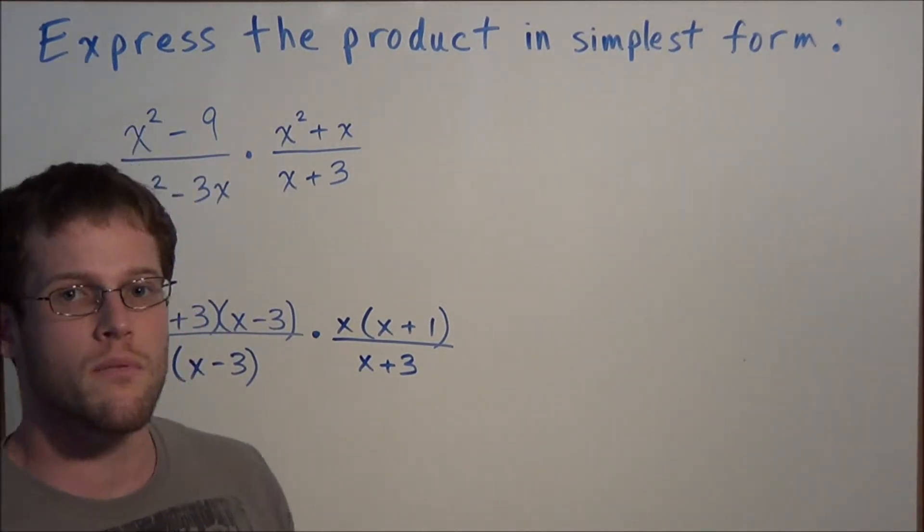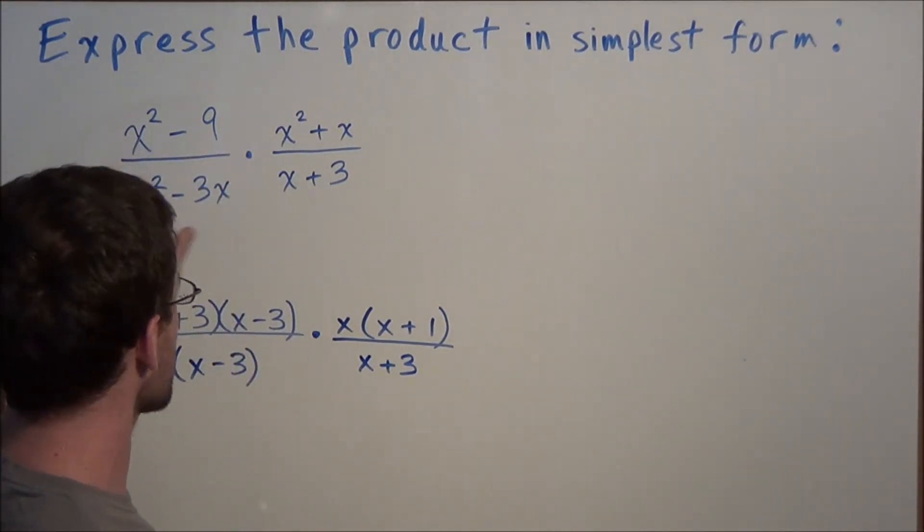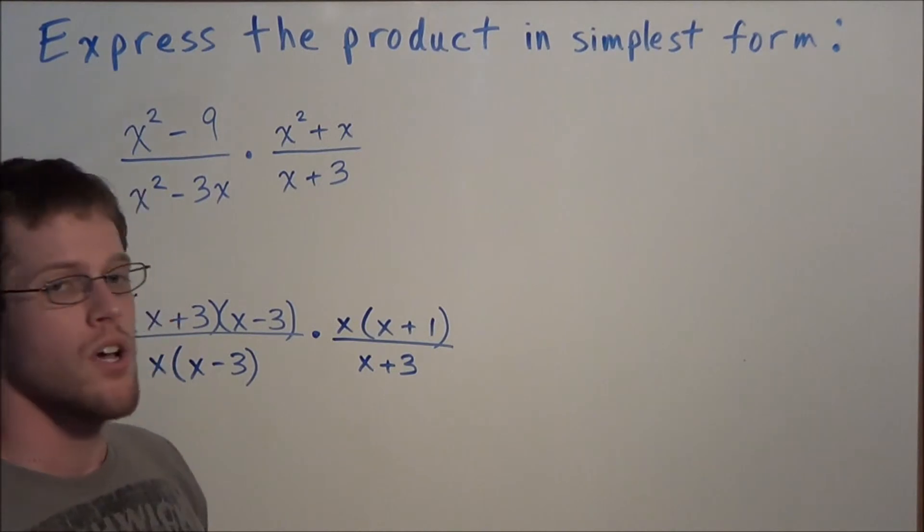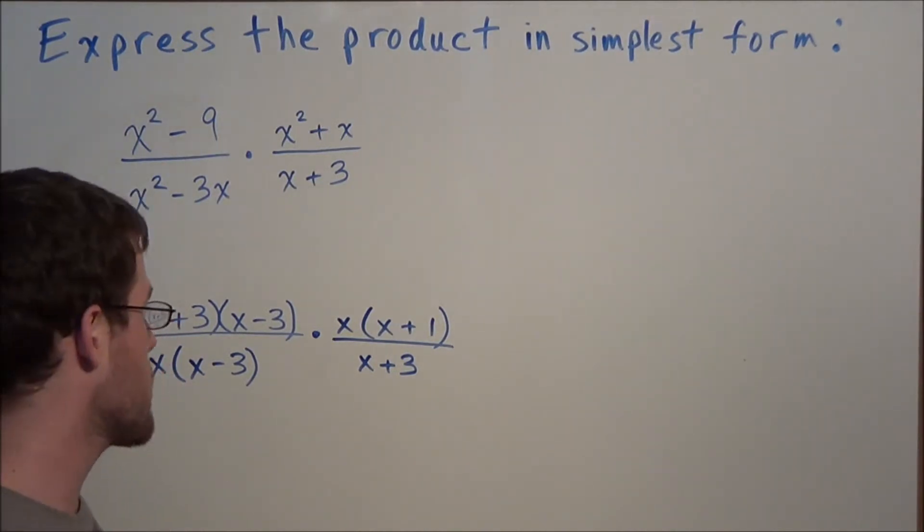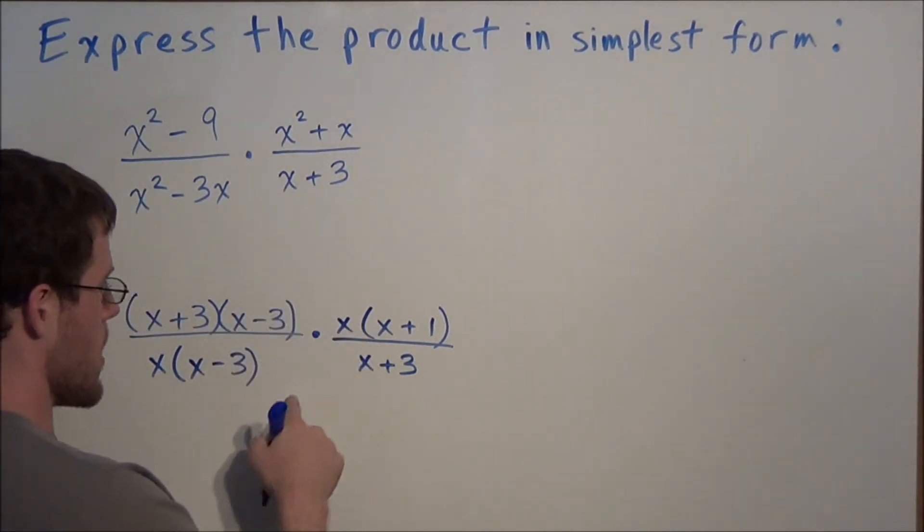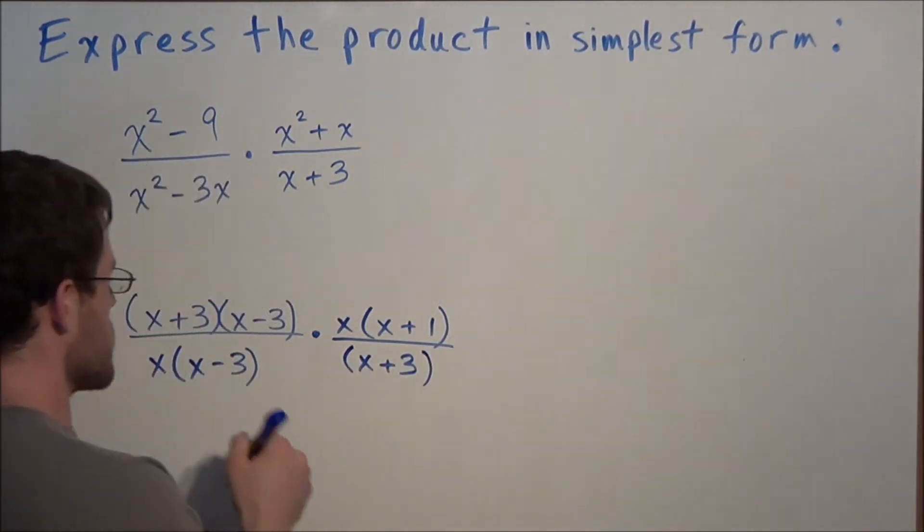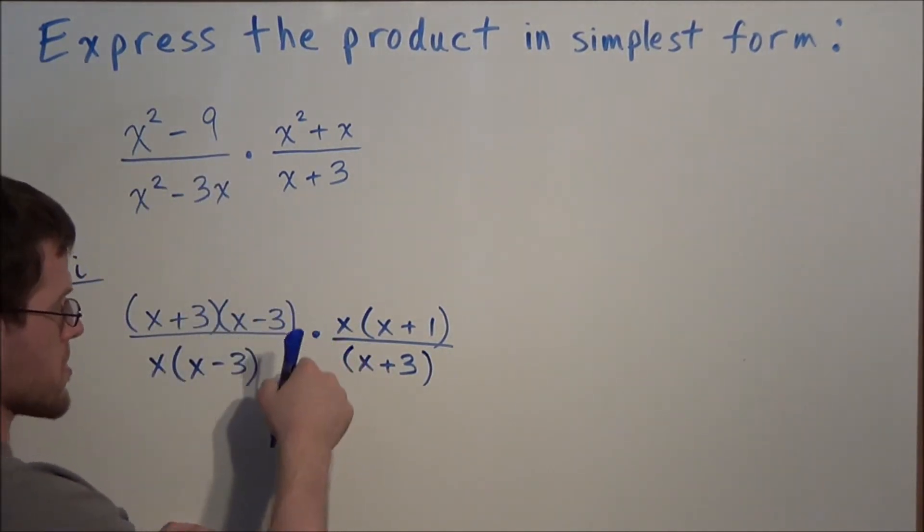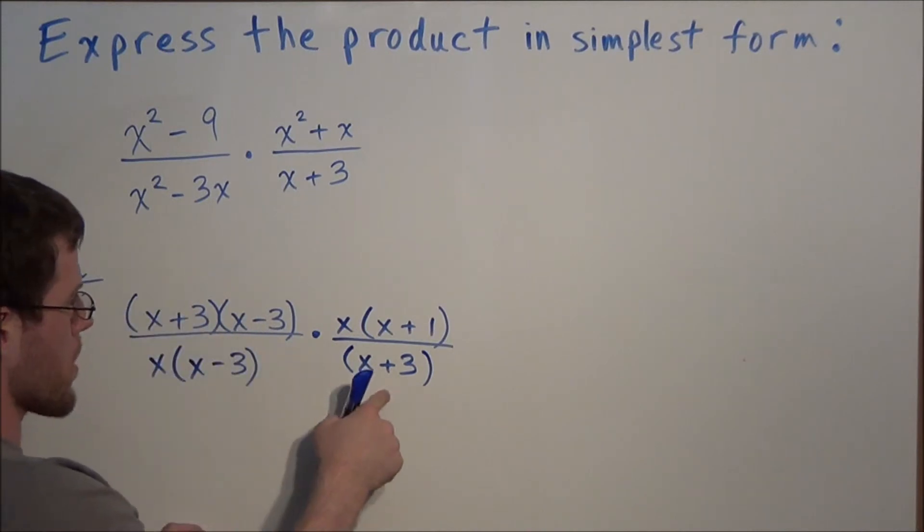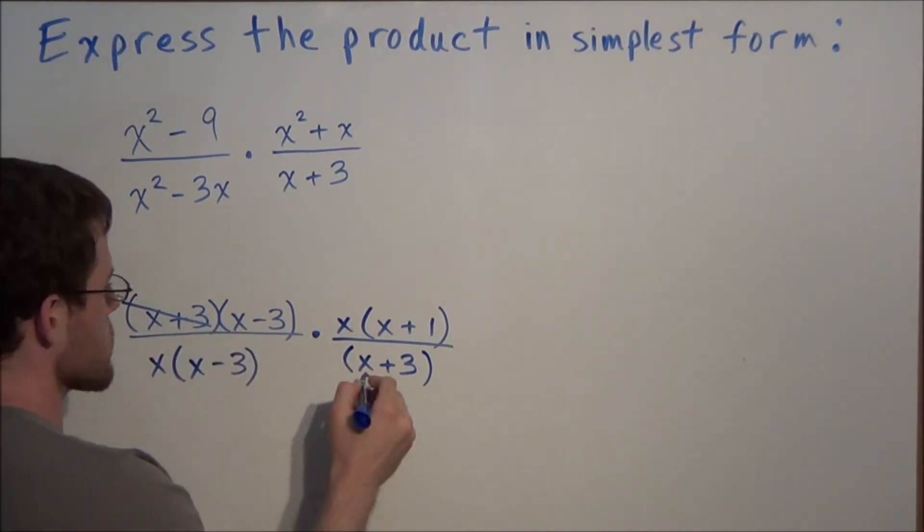Now the second part: after we factored each section of the original fraction, next we want to cancel out common factors between the numerators and denominators. We just look between the numerators and denominators, and we see x plus 3 over x plus 3 can be canceled out.